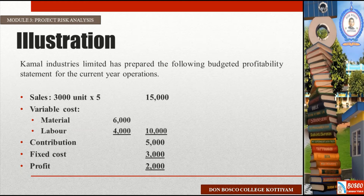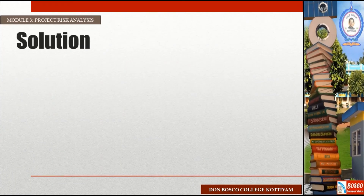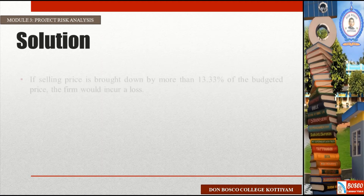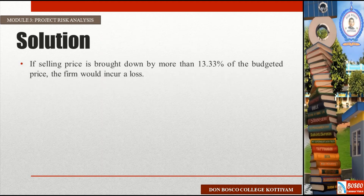How do we apply sensitivity analysis to Kamal Industries Limited's profitability statement? We identify the parameters and factors and apply values to each. For the first factor, if the selling price is brought down by more than 13.33% of the budgeted price, the firm would incur a loss. So a 13.33% change in selling price is the sensitivity threshold.